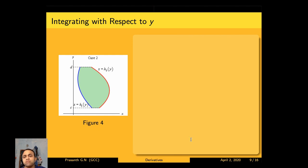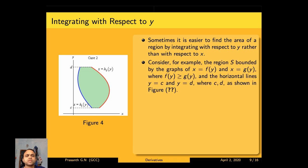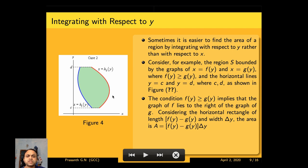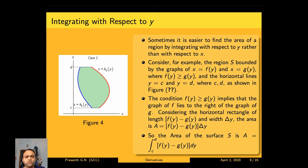Sometimes the curve may be oriented so that it is easier to integrate with respect to y rather than x. In that case, if h₂(y) ≥ h₁(y), we take [h₂(y) − h₁(y)] Δy to get the area element. The area of the region between two curves expressed as functions of y is: A = integral c to d [f(y) − g(y)] dy.